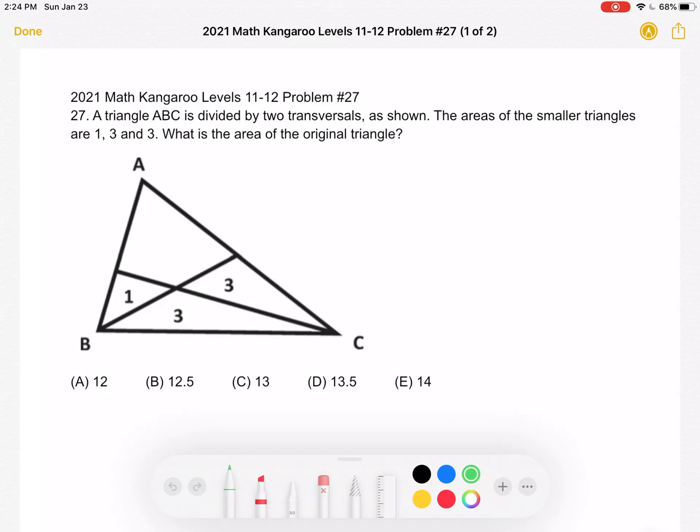The areas of the smaller triangles are 1, 3, and 3. What is the area of the original triangle?